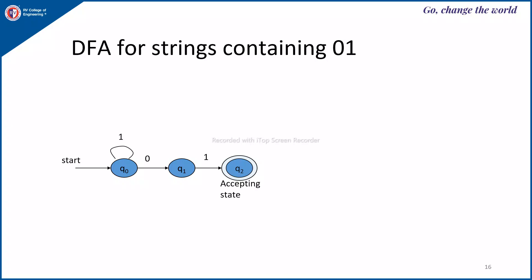If the string starts with 1, you remain in Q0 until you encounter the first 0, so on Q0 reading 1 you stay in Q0. Once the '01' substring is found you are in state Q2. After that you can have any number of 0s and 1s, so there is a self-loop on Q2 for both 0 and 1. On Q1 reading 0, you stay in Q1 (still haven't seen the 1 yet). So Q0 has transitions on 0 and 1, Q1 has transitions on 0 and 1, and Q2 has transitions on 0 and 1.